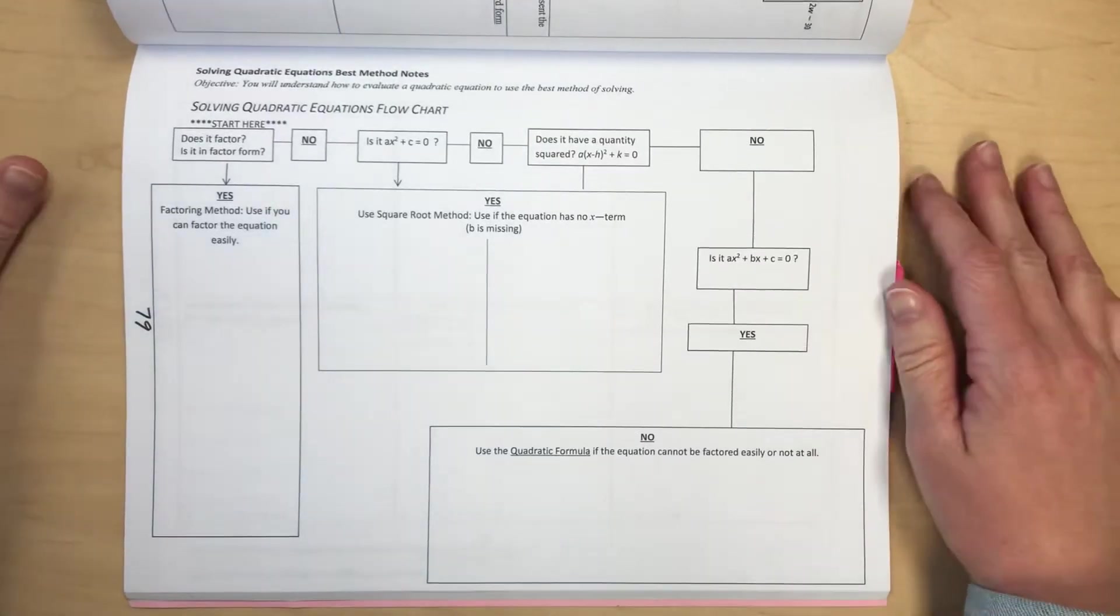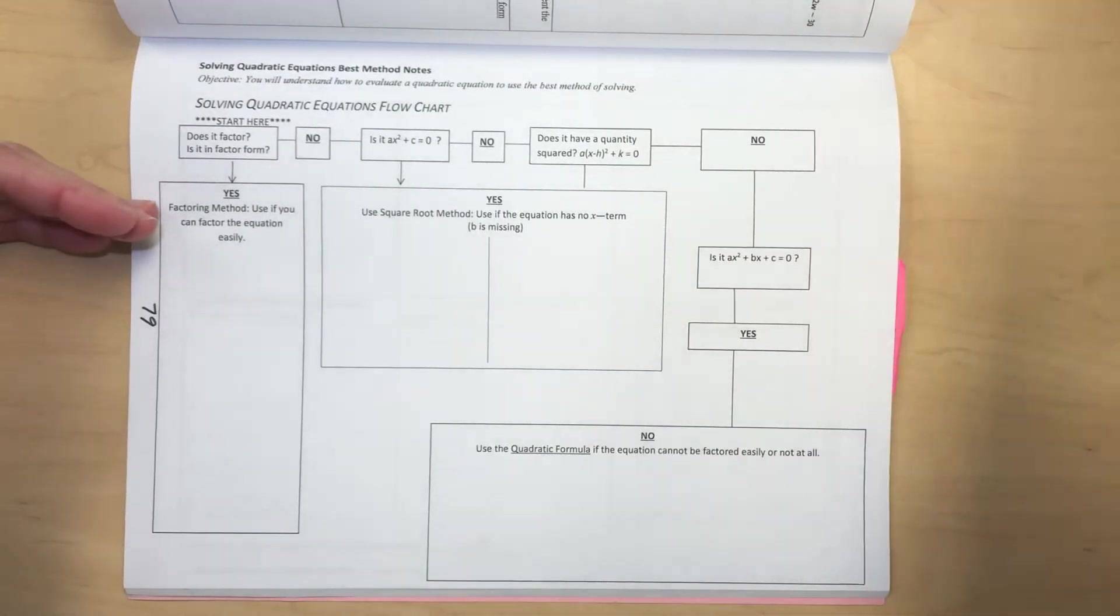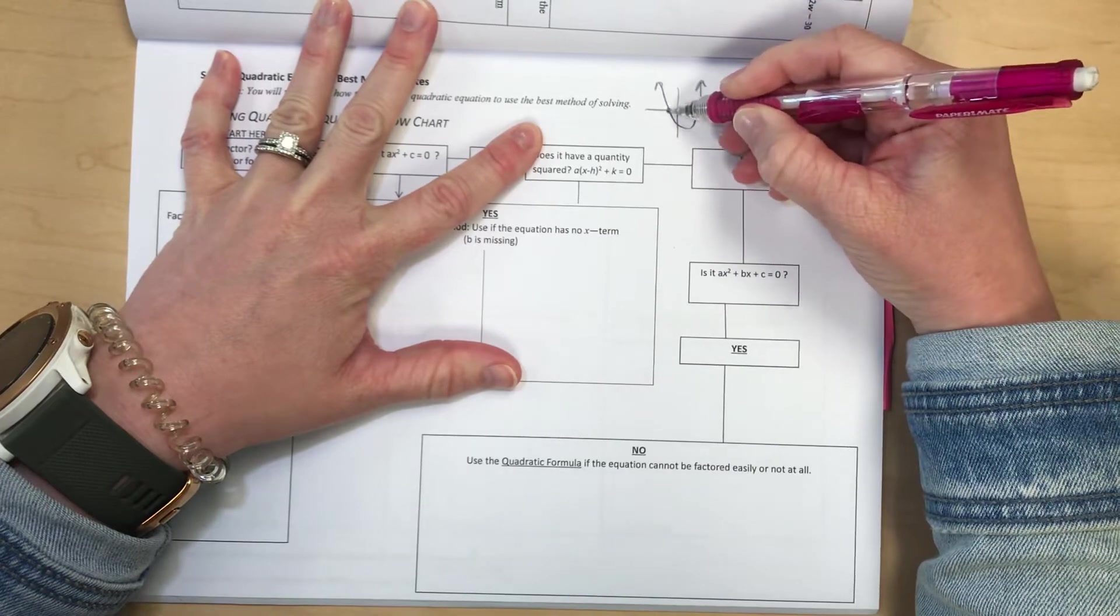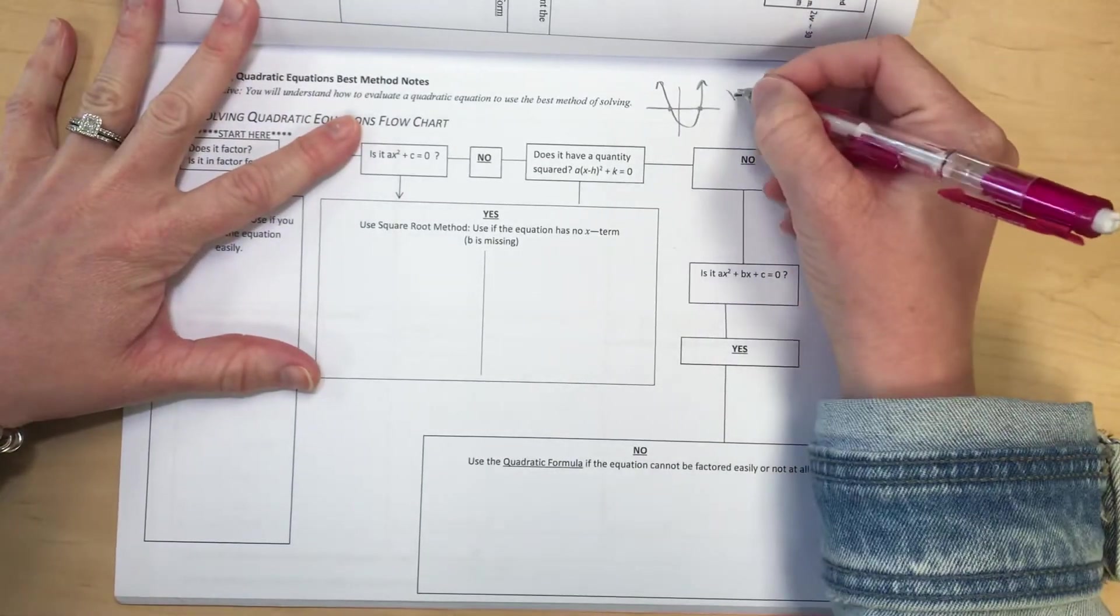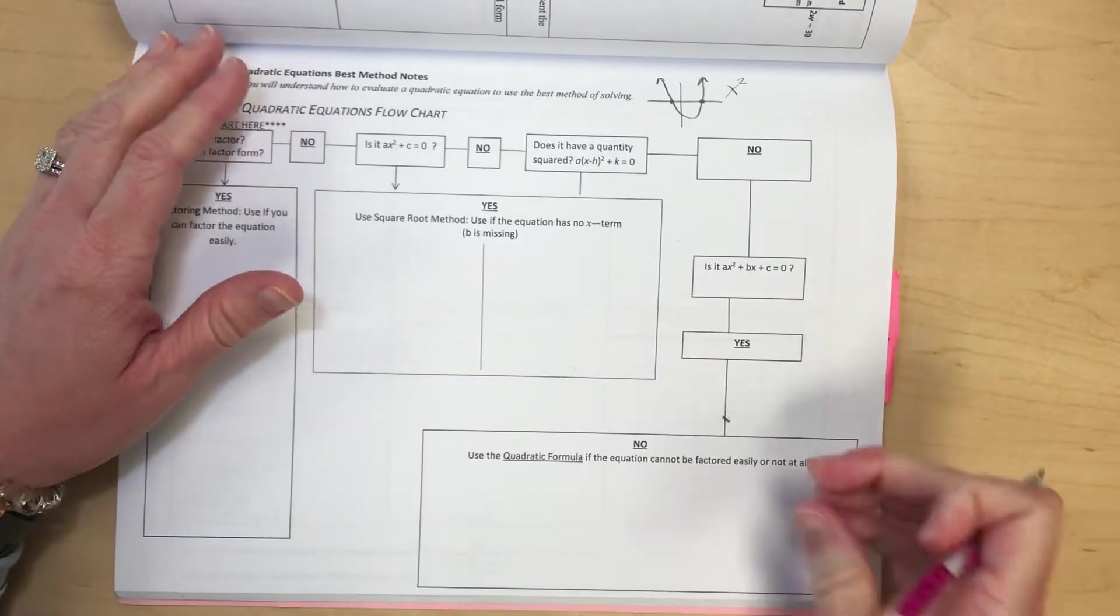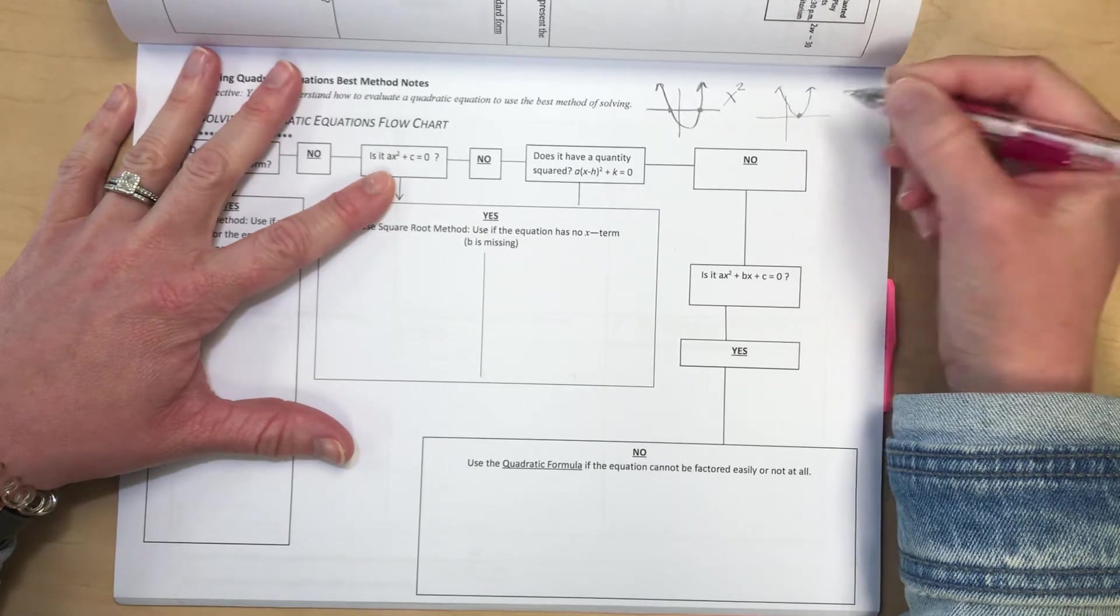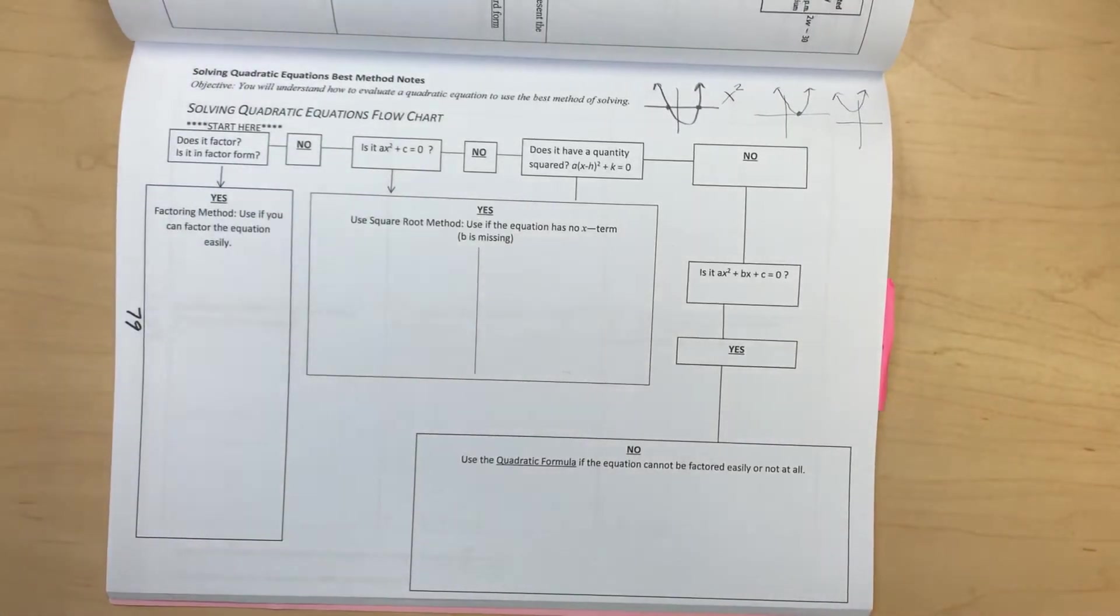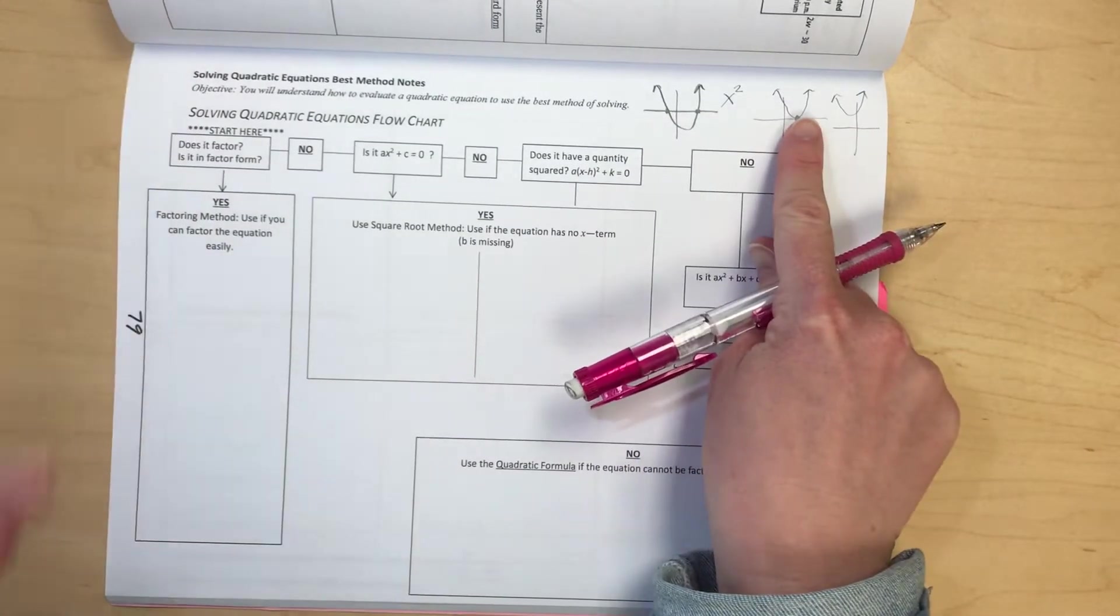In this video, I'm going to run through a graphic organizer for how to tell which method to use for solving a quadratic. What we're really doing here when we're solving is finding when our parabola is going to cross the x-axis, if it crosses, and then where it potentially crosses. If it crosses, and then where it potentially crosses.